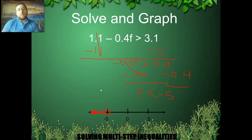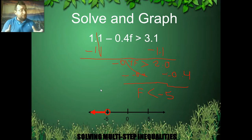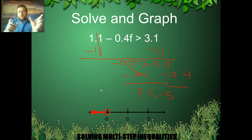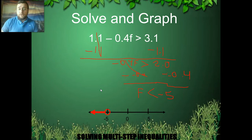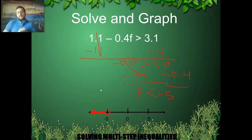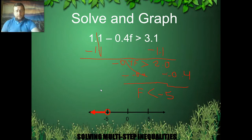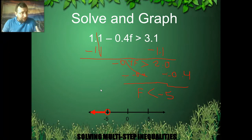That's how you solve inequalities that have steps where you divide or multiply by a negative. Don't forget that if you have negative y, or negative x, or a negative letter, you're not quite done yet — you still have to get rid of that negative sign. It's as if there was a negative 1 in front of it, and in that case you divide by negative 1 and also flip the inequality sign.